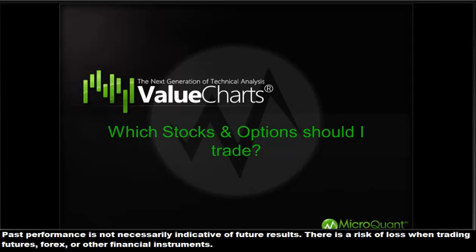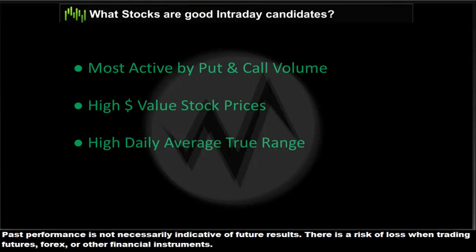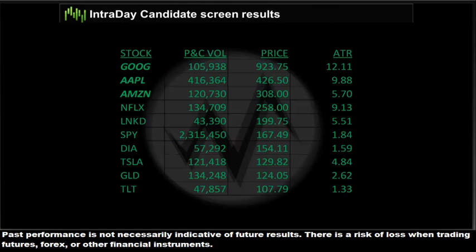The first question is: which stocks and options should I trade? This is really important especially if we are scalping or trading intraday. To screen for good intraday candidates, we first pulled up a list of the 50 most active individual stocks and ETFs by put and call volume. Then we ranked those top 50 in order of highest to lowest dollar value for the stock prices. Then we evaluated the top 20 of that resulting list by the highest daily average true range.